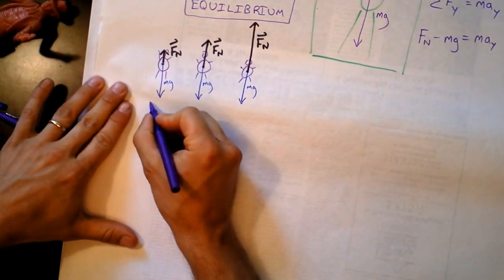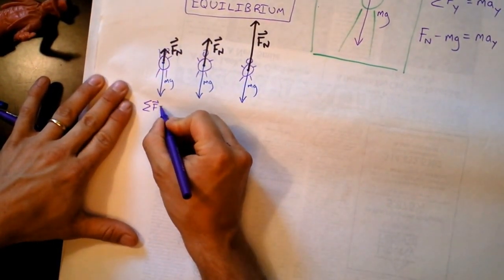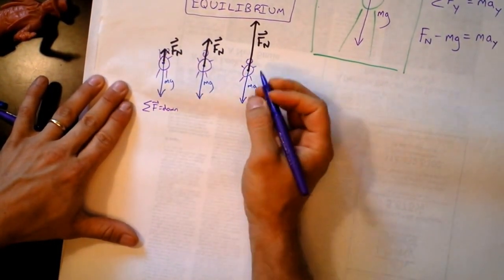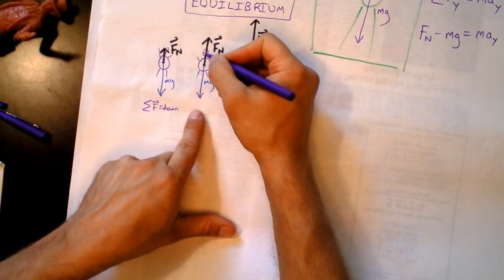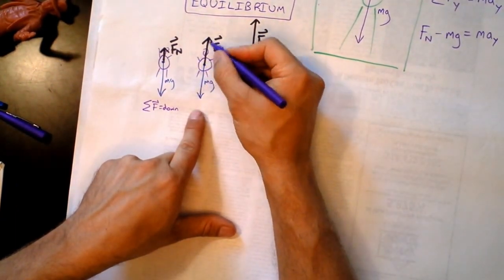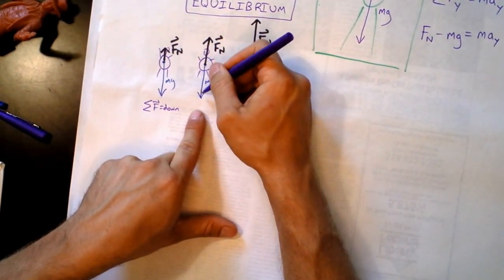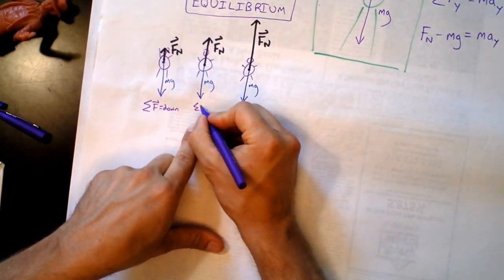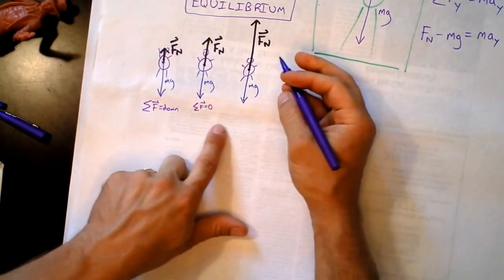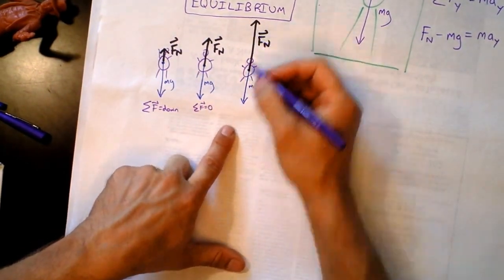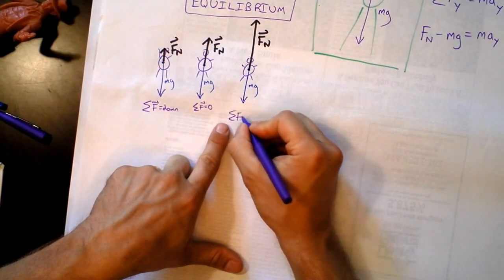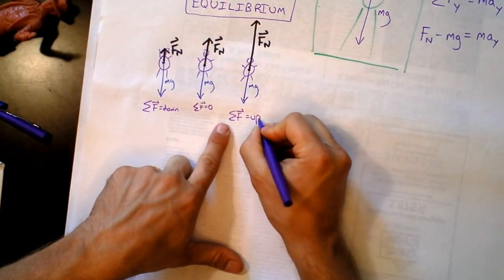a net force vector that's pointing downward. So I'm going to say that the net force is down here. In this one, the net force is zero because the force up exactly cancels the force down. The floor is pushing on you just as much as gravity is pulling you downward, so I say that the net force is zero. In this one, there's a net force upward, so I can write that the net force is up.